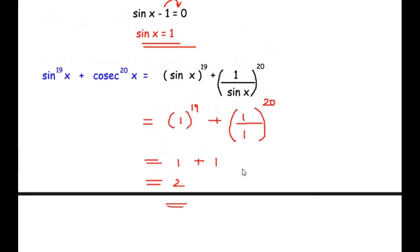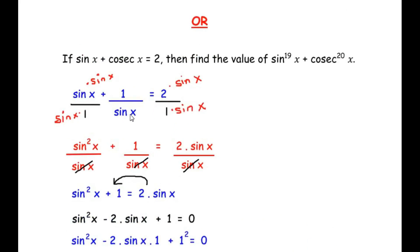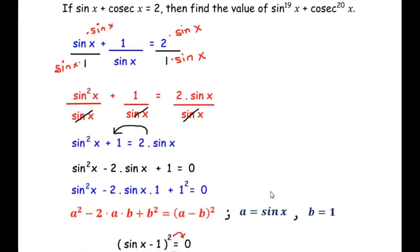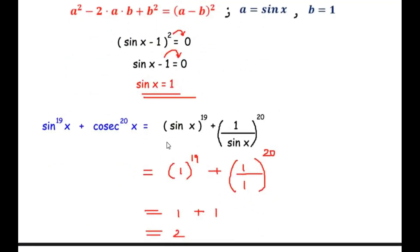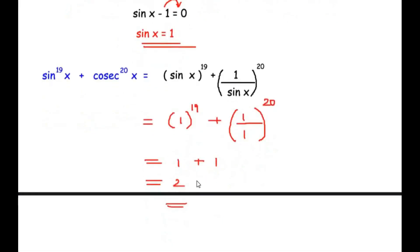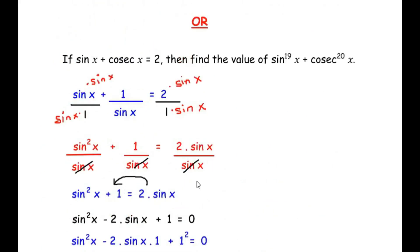To solve this, we used the reciprocal trigonometric function cosec x = 1/sin x, and then the algebraic identity a² - 2ab + b² = (a-b)². We found sin x = 1 and plugging it into the expression gave us the value 2. I hope you understood all the steps and liked the video. If you know any other way of solving these examples, do comment below, and if you liked the video, like, share, and subscribe. Thank you for watching.